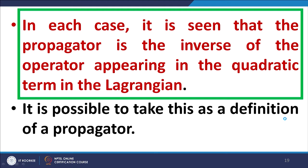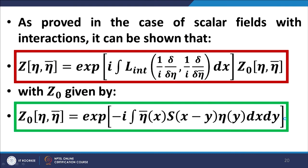For the interacting Dirac fields, we can use the relationship derived earlier in the context of scalar fields with interactions. The same expression literally holds for interacting Dirac fields. The version for the Dirac field is given in the red box in the middle of the slide, where Z₀ is the free-field generating functional we have just derived, given in the green box at the bottom.